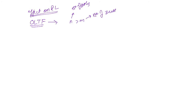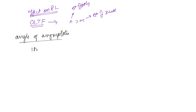The effect on the root locus we can find out from the angle of asymptotes. The angle of asymptotes is given by 180 times (2i + 1) divided by mod of (n minus m).